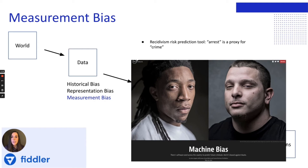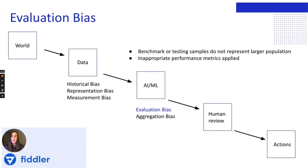The recidivism risk prediction tool COMPAS led to higher false positive rates for Black versus white defendants. Now, even if we have perfect data, our model can still introduce bias.